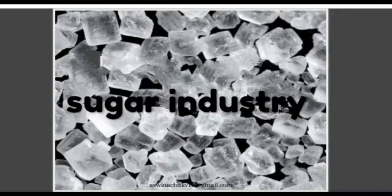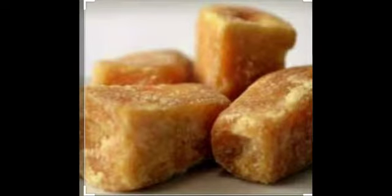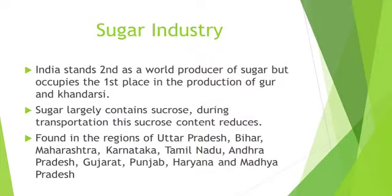Now let us discuss the next important agro-based industry of India, i.e. the sugar industry. India stands second as a world producer of sugar but occupies first place in the production of gur and khanceri. Sugar cane largely contains sucrose, and during transportation this sucrose content reduces, which is why sugar mills are located near sugar cane growing areas. In India, these regions spread over Uttar Pradesh, Bihar, Maharashtra, Karnataka, Tamil Nadu, Andhra Pradesh, Gujarat, Punjab, Haryana and Madhya Pradesh. In recent years, there is a tendency for mills to shift and concentrate in southern and western states, especially Maharashtra.